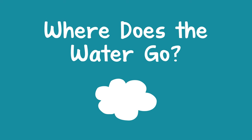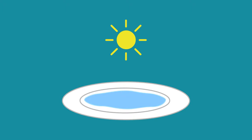A child can learn about water evaporating by seeing it for themselves. You can help them put a small amount of water on a plate and place it outside in the sunlight. Later, they can check the plate and see that the water is gone.